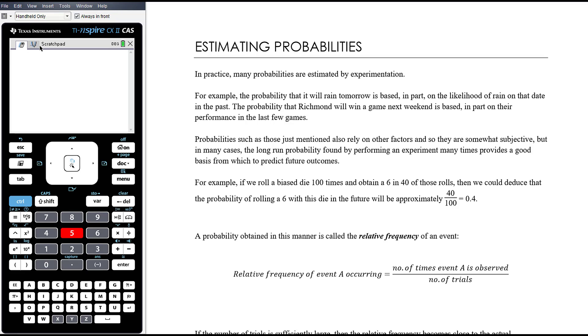Okay, so in the previous video we looked at calculating probabilities with equally likely outcomes, but in practice many probabilities are estimated by experimentation. For example, the probability that it will rain tomorrow is based in part on the likelihood of rain on that date in the past. The probability that Richmond will win the game next weekend is based in part on their performance in the last few games.